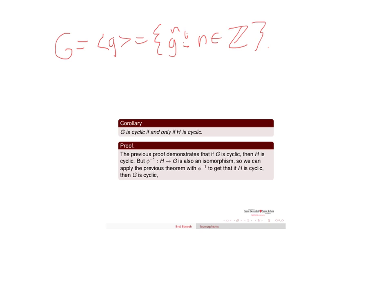Then what we're using here is phi of G to the N equals phi of G to the N.